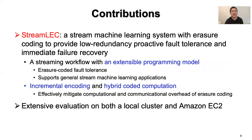Our contribution is StreamLake, a stream machine learning system with erasure coding to provide low-redundancy proactive fault tolerance for immediate failure recovery. We first designed a streaming workflow and an extensible programming model for StreamLake, so as to integrate erasure coding into general stream machine learning applications. We also proposed two techniques to mitigate erasure coding overhead: incremental encoding to mitigate computational overhead, and hybrid coding computation to mitigate communication overhead. Finally, we prototype and evaluate StreamLake on a local cluster and on Amazon EC2.